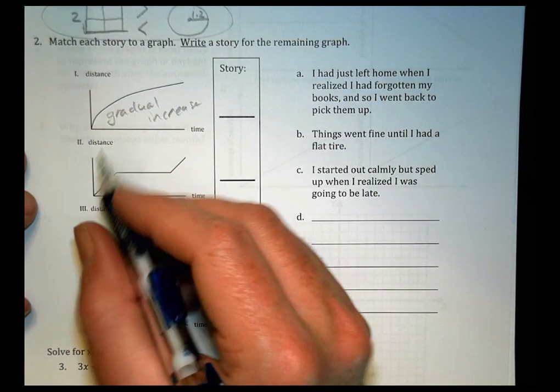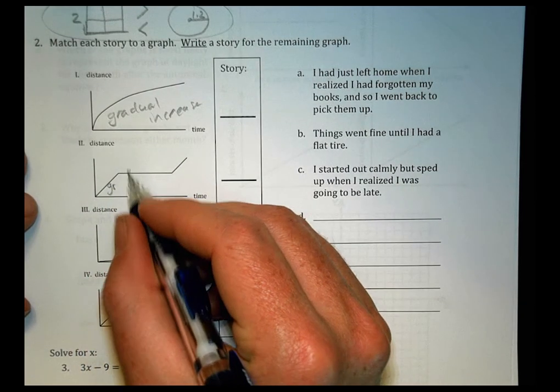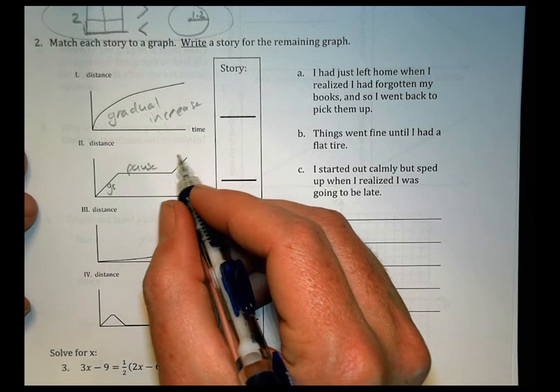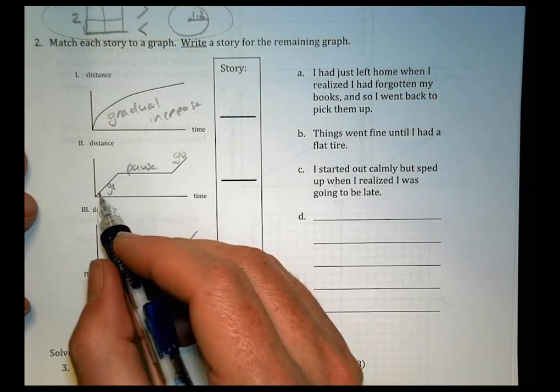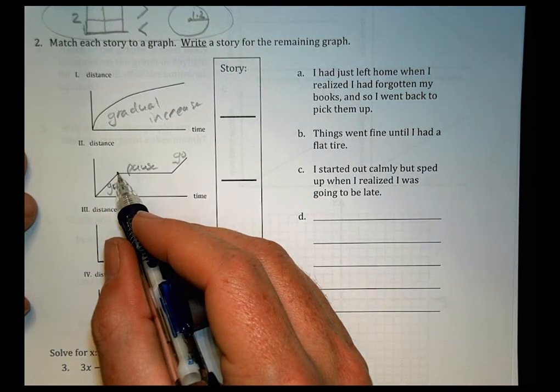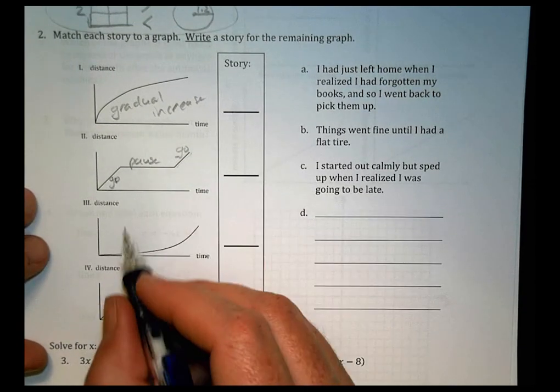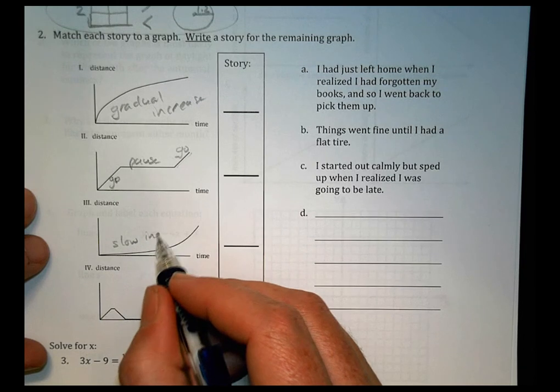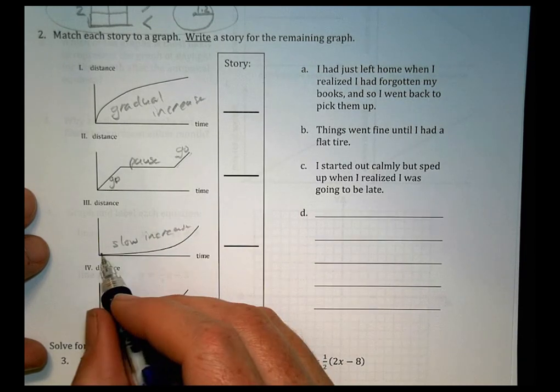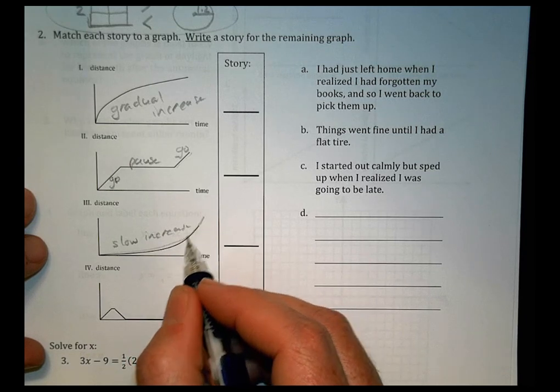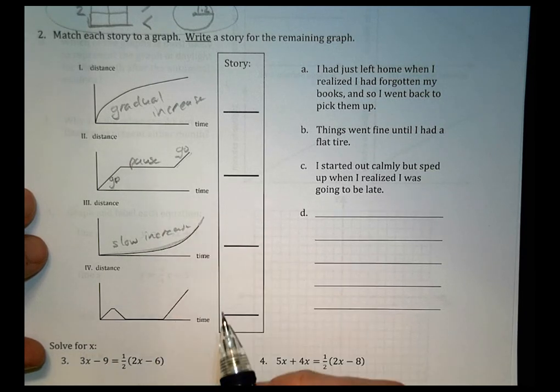On this one here, we can see you're kind of going, there's some kind of pause in the distance and then it goes some more. So this one, in terms of time, it goes for a while, there's no movement and then it goes again. This one is a slow increase, right? So the distance is really slow at first and then it kind of gets going towards the end. So it takes a while to start making distance there.